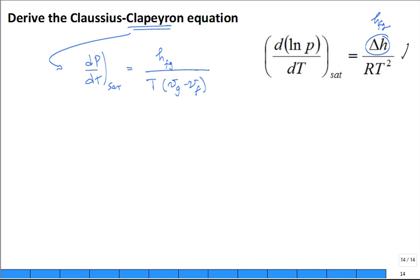Okay, there's one approximation that V_G is so much bigger than V_F typically. If I look at the volume occupied by a liquid versus the volume occupied at the same pressure by the vapor, the vapor volume is so much larger you neglect it. So that's the first approximation.